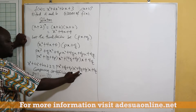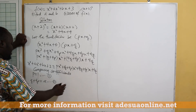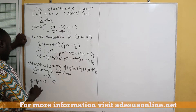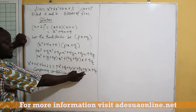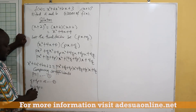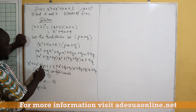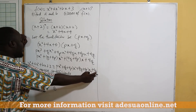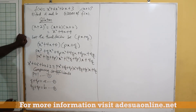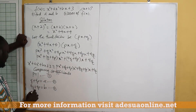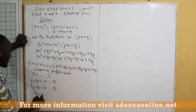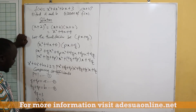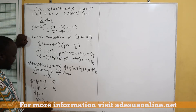Then we have 4q plus 4p as the coefficient of x, which equals b — let's call this equation 3. And the last one: 4q is equal to 3, which is the constant term — equation 4. From equation 4, q is equal to 3 over 4.